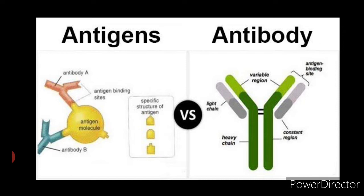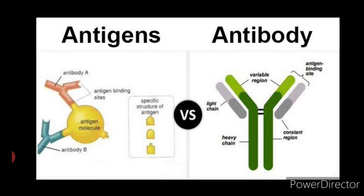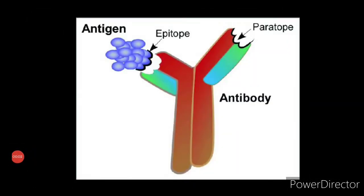Antibody is defined as an immunoglobulin protein molecule synthesized on exposure to an antigen that can combine specifically with that antigen. Now let us understand what is epitope and paratope.